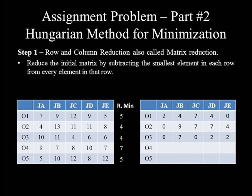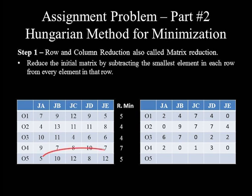In row 4: 9−7=2, 7−7=0, 8−7=1, 10−7=3, and 7−7=0. In row 5: 5−5=0, 10−5=5, 12−5=7, 8−5=3, and 12−5=7.